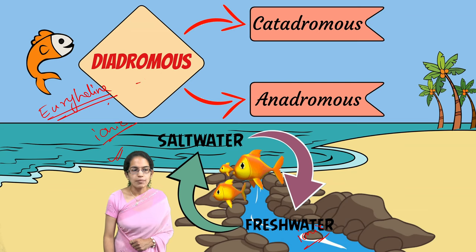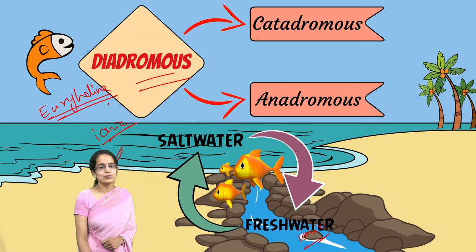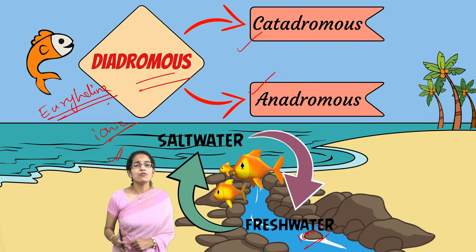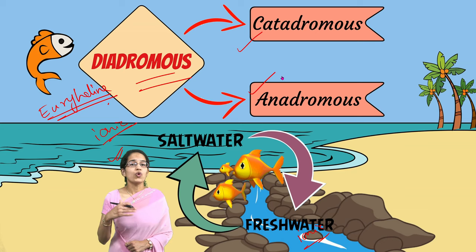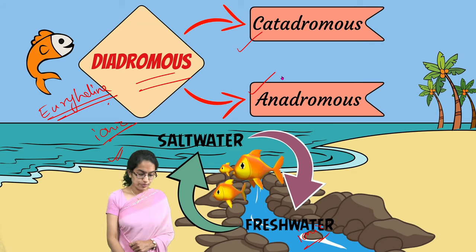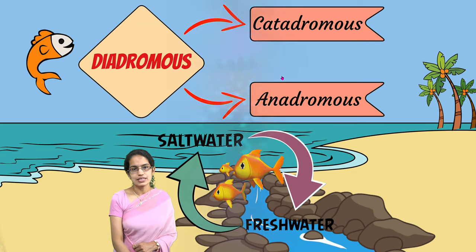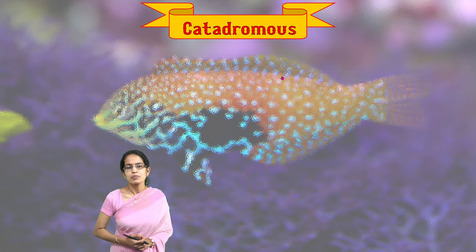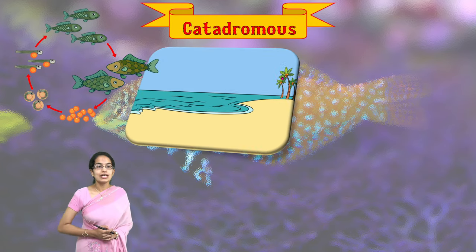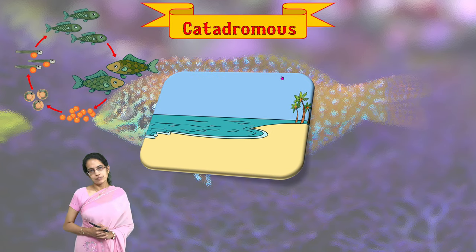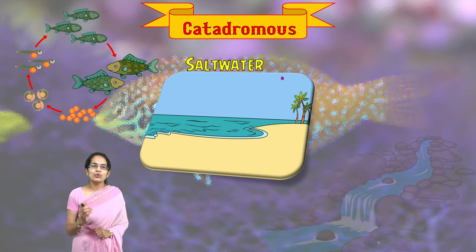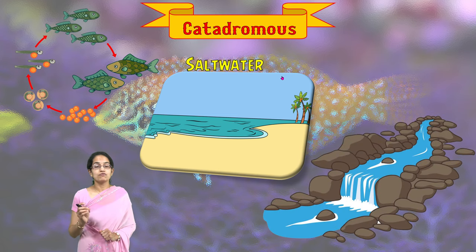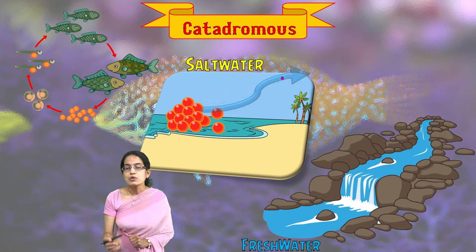To talk about diadromous fishes, we can classify those as catadromous and anadromous. Let's understand what catadromous and anadromous are, what their examples are, and how we can best remember these two types of classification. The first classification is catadromous. Catadromous are those fishes which are down-running.